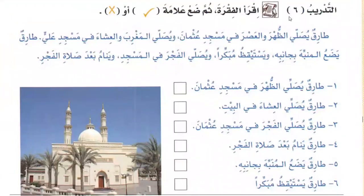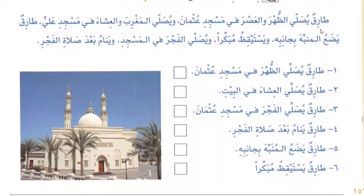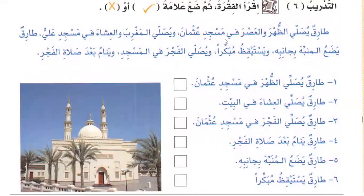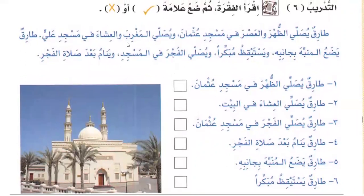Exercise six — read the paragraph, then put the check mark or cross mark. Tarik yusalli al-zuhra wal-asra fi masjid-i usman — Tarik prays the Zuhur and Asr in Masjid Usman. Wa yusalli al-maghrib wal-isha'a fi masjid-i ali — and he prays the Maghrib and Isha in Masjid Ali.